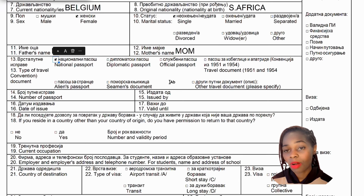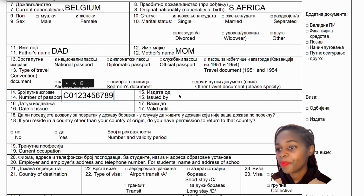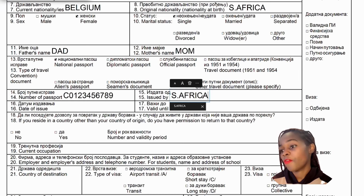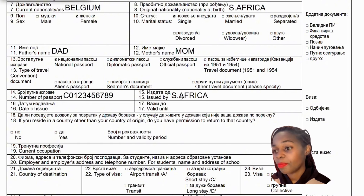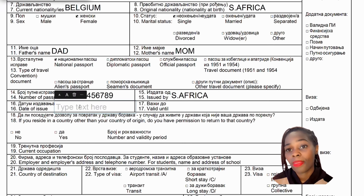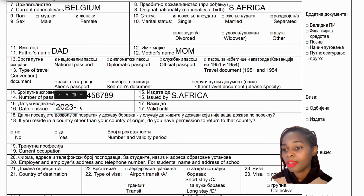Slot number fourteen is your passport number — every passport has a number, so type it in. Slot number fifteen is issued by — mention the country that issued your passport, for example, Republic of Serbia. Slot number sixteen is the date of issue — state the date following the required date format.